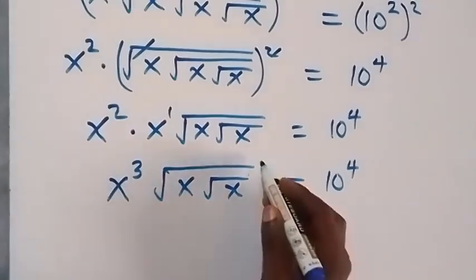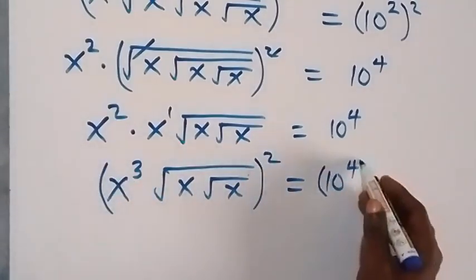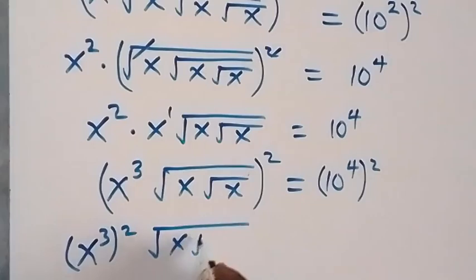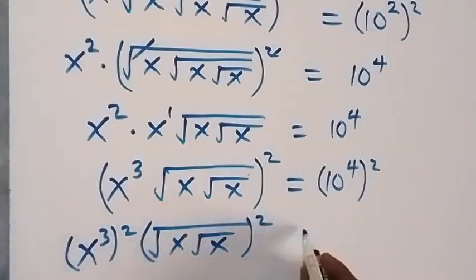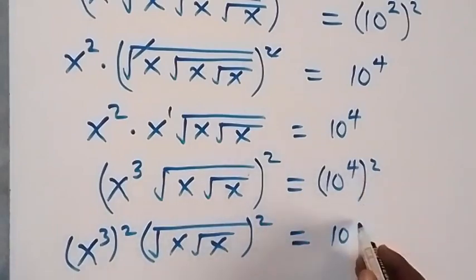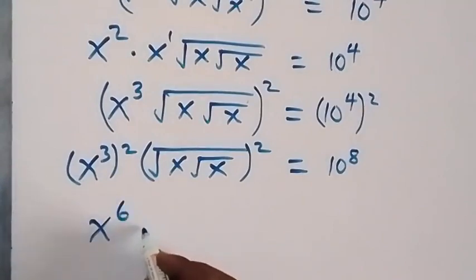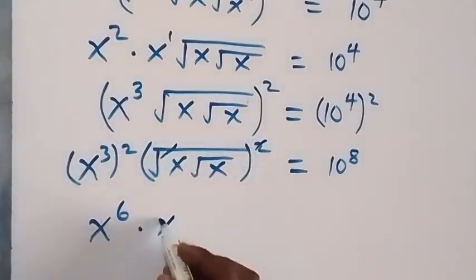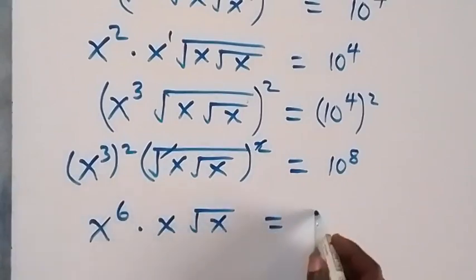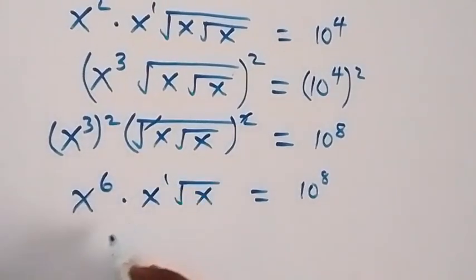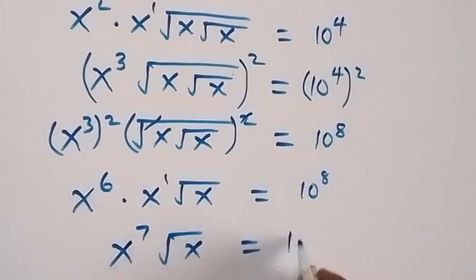Now let's square again — squaring both sides. This square also affects x, so we have x raised to power 3, and x raised to power 3 squared. Also root x, root x squared as well, equals 10 raised to power 8 — since 2 times 4 is 8. That gives us x raised to power 6, then x, square root of x, root x, equals 10 raised to power 8. Bringing this together as x raised to power 7, times root x, which equals 10 raised to power 8.